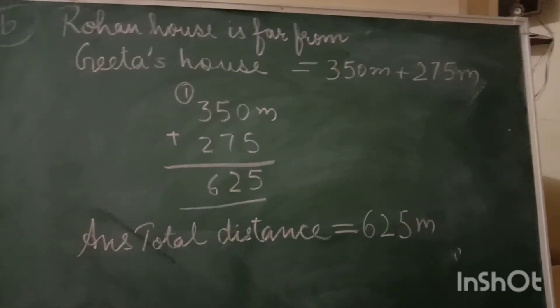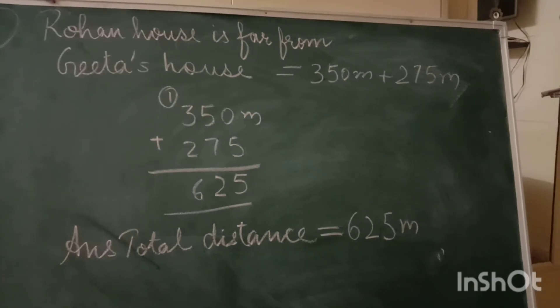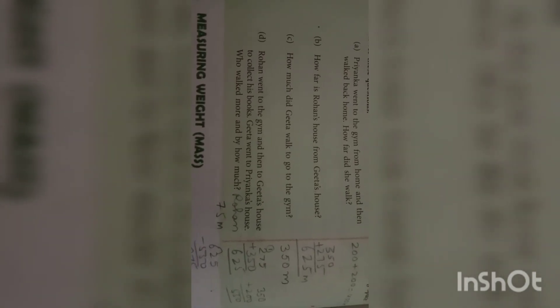Now I will read question number C. Rohan went to the gym and then to Geeta's house to collect his book. Geeta went to Priyanka's house. Who walked more? So first we have to add, then you get the subtraction, so you come to know who walked more by how much distance.